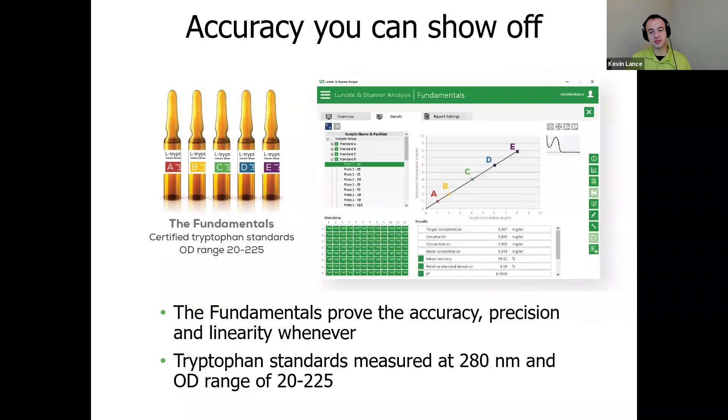The UV-Vis of Stunner is also shockingly accurate, and Stunner loves to prove it. So using the fundamentals tryptophan standards, the accuracy, precision, and linearity of the instrument can be proven at any time across the OD range of 200 to 225. So you can be confident about every sample with data that leaves no room for doubt.